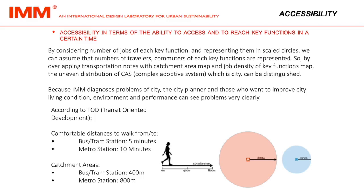By considering the number of jobs of each key function and representing them in scaled circles, we can assume the numbers of travelers and commuters of each key function are represented. By overlapping transportation nodes with catchment area map and job density of key functions map, the uneven distributions of CAS — complex adaptive system, which is the city — can be distinguished. Because IMM diagnoses problems of the city, city planners and those who want to improve city living conditions, environment and performance, can see problems very clearly.